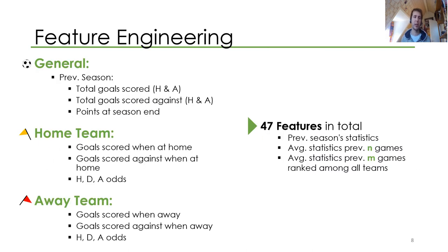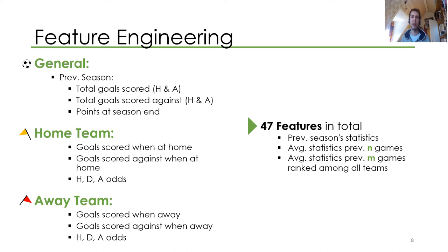I did a lot of feature engineering. In general, I combined the games of the previous season for each team in total goals scored, total goals scored against, and points at the end of the season as a general feature for each team in the game — and then for the home team and the away team accordingly. Also the home, draw, and away odds, which basically tells the model if the team tends to be the favorite or the underdog. In total, 47 features: the previous season's statistics, the average statistics over the previous N games (a hyperparameter), and over the previous M games, the rank among all teams on a game day.